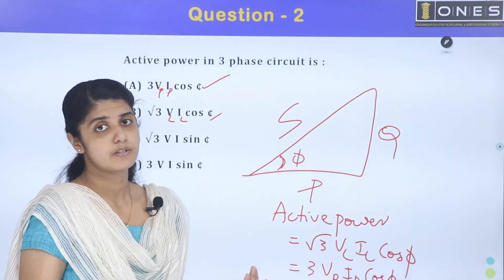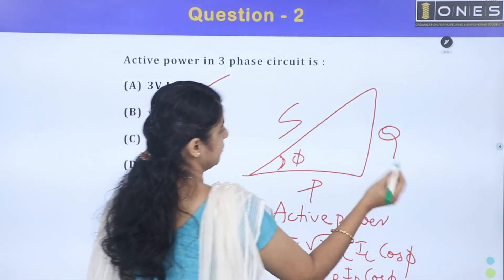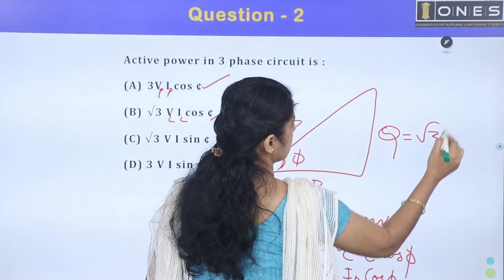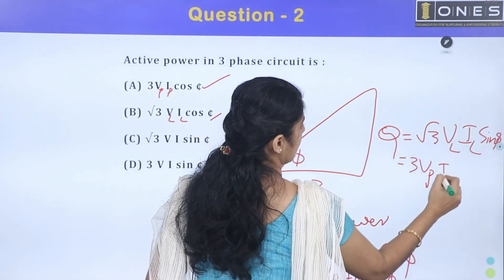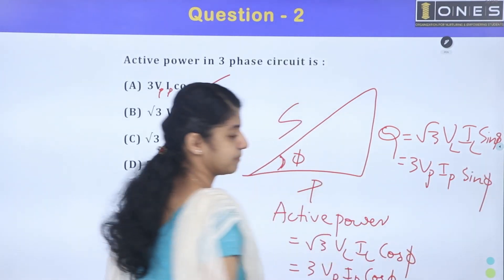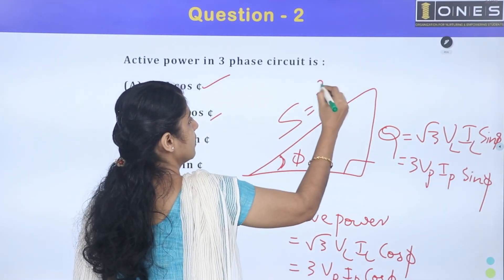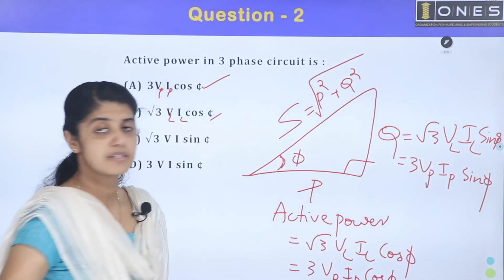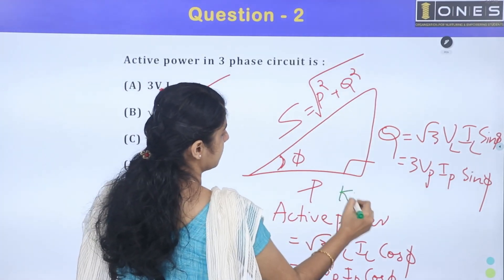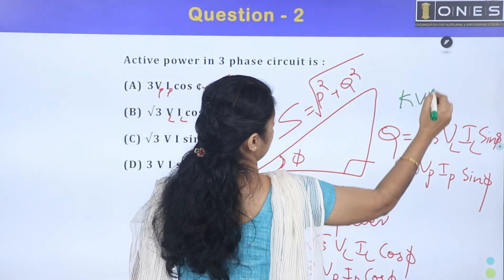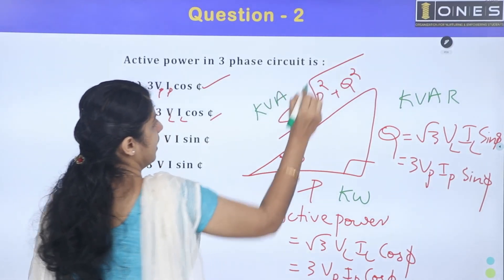Active power is root 3 VL IL cos φ, which equals VP IP cos φ — the phase value equals line value. Reactive power Q is root 3 VL IL sin φ, equal to VP IP sin φ. Apparent power S equals the square root of P squared plus Q squared. Units: active power is kW, reactive power is kVAR, and apparent power is kVA.